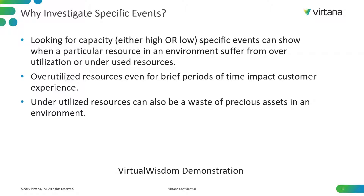So why should one investigate these specific types of events? The type of events we're going to look for today is looking for capacity issues, and capacity issues can be defined either as having too much or too little. For example, overutilized resources like CPUs hitting 100%, NIC cards hitting 100%, host bus adapters hitting 100% — in those situations, running out of resources can introduce delay and instability in the environment, which impacts the customer experience on your platform.